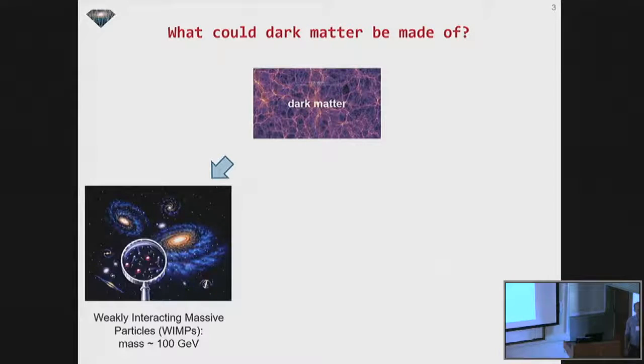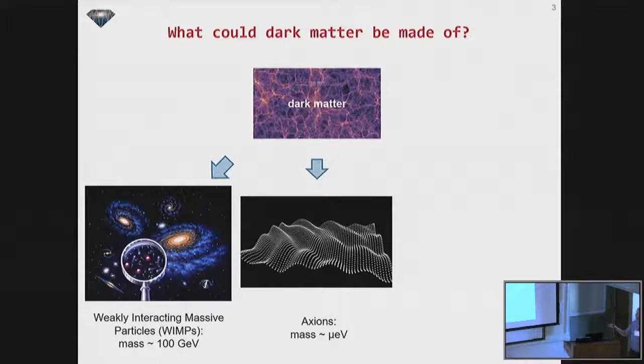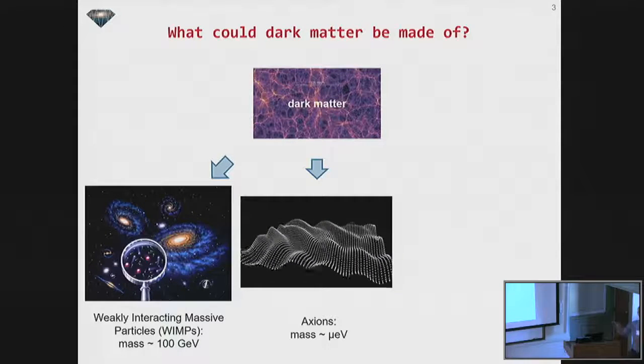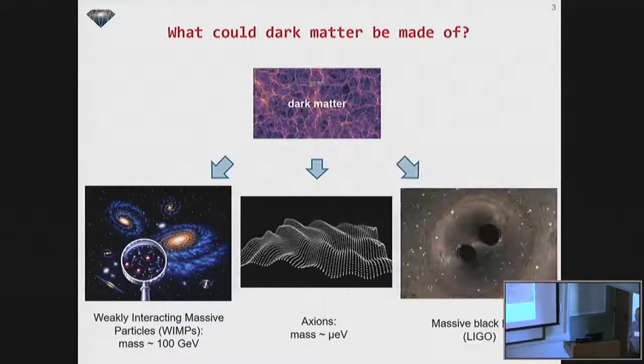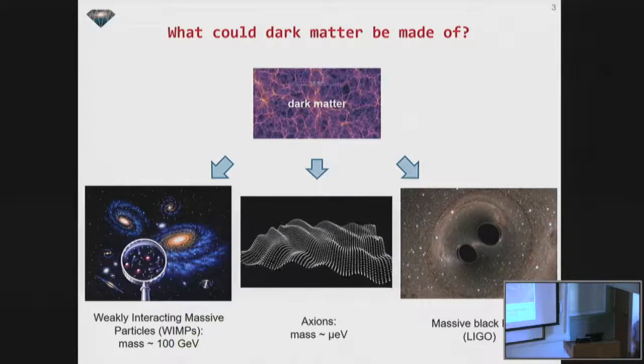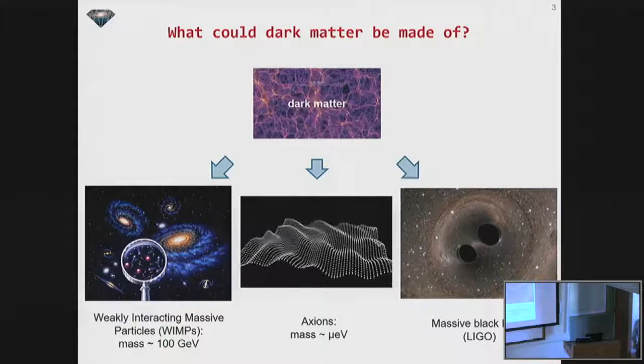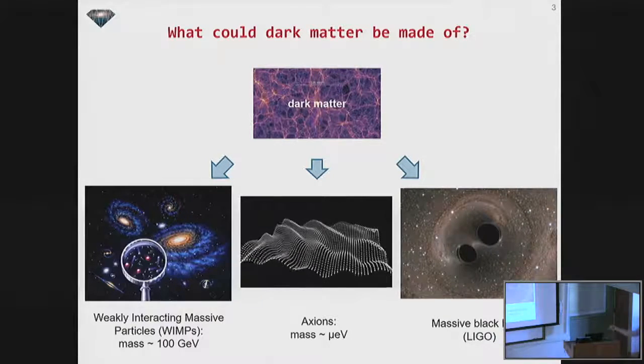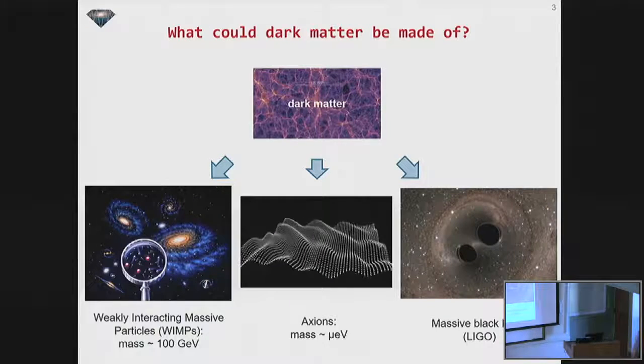And there's a number of candidates for what dark matter could be. I'm going to focus on a couple of possibilities. The first one is WIMP, a weakly interactive massive particle with maybe 100 GeV mass. Another candidate is the axion, much lighter. And of course, after the LIGO detection, there's been some talk about the possibility that dark matter actually resides in some massive black holes, which I will not talk about at all. But I wanted to put LIGO in my talk.